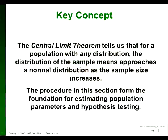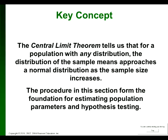The central limit theorem tells us that for a population with any distribution — it doesn't even have to be normal — the distribution of sample means approaches a normal distribution as sample size increases. Even if men's weights weren't normally distributed, if I took groups of 100 men and plotted their average weights across many groups, those averages would be normally distributed even if the individual weights were not.